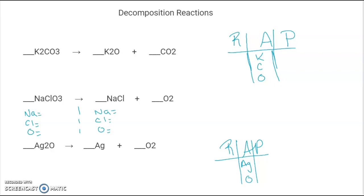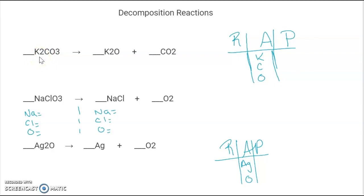On this first page for decomposition, we're going to look at the first equation. On the side we have our wrap chart already — reactants, atoms, and products. So on the reactant side we have K2, so there are going to be two potassium. We have C with no subscript after it, so there's going to be one of those, and a three after the O, so we have three oxygen on our reactant side.